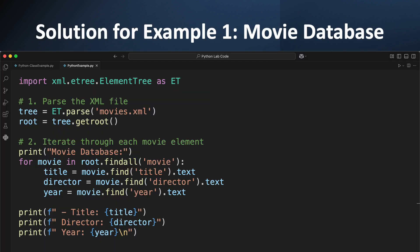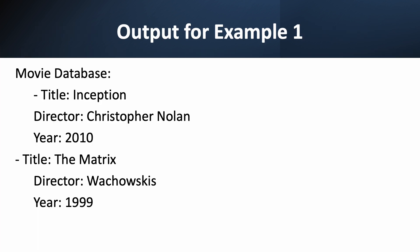This is a classic data extraction problem. Here's the code to solve our movie database problem. First, we do our standard import and parse the movies.xml file to get the root. Now instead of just iterating over the root, we'll use findall. This is a handy method that finds all elements with a specific tag name. root.findall('movie') will give us a list of all the movie elements. Then we use our for loop to go through each movie in that list. Inside the loop, we grab the text from the title, director, and year child elements using find and .text and store them in variables. Finally, we use a formatted print statement to display the information in a nice, readable format. And when we run our code, the program successfully read the XML file, navigated the tree structure, and pulled out the specific pieces of information we wanted — the title, director, and year for each movie, neatly formatted on the screen.